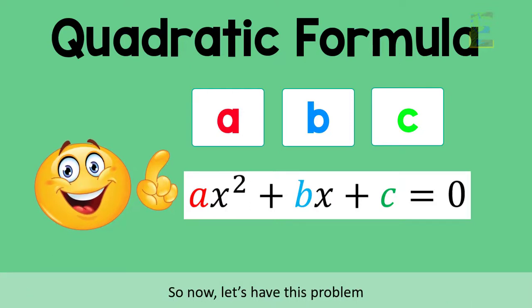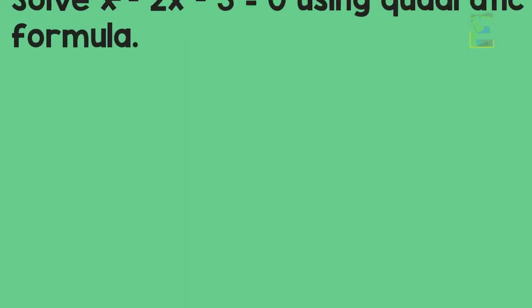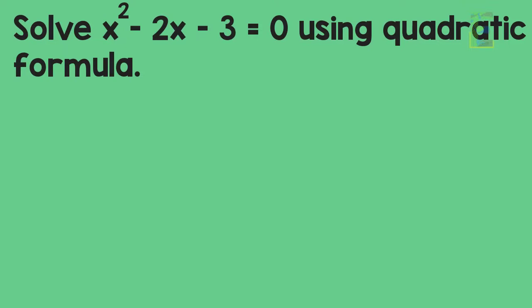So now, let's solve this problem: x squared minus 2x minus 3 equals 0.